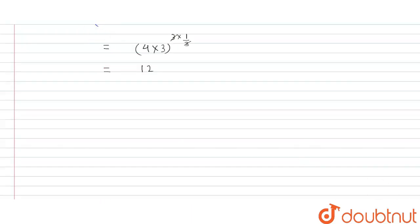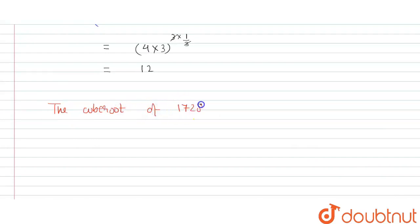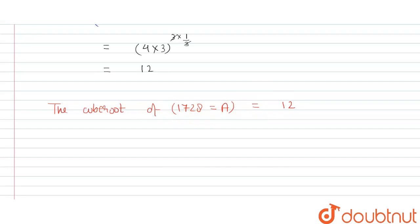So finally we can write: the cube root of 1728, which we let a, is equal to 12. This is our final answer.